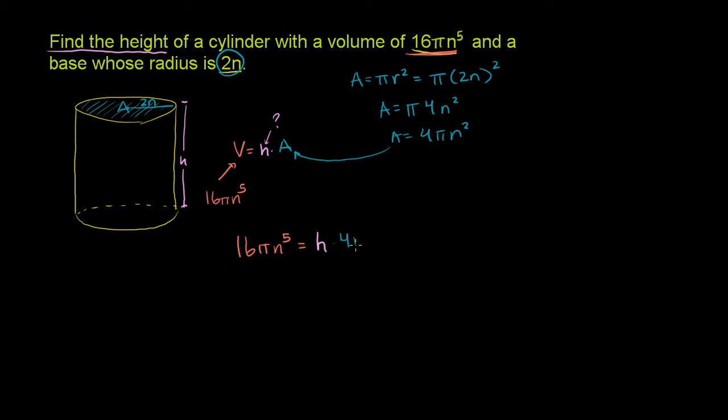A good place to start if we're trying to solve for h, or actually it'll get us right there immediately, is let's divide both sides of this equation by 4π n squared. So you divide the right side by 4π n squared. Divide the left side by 4π n squared. You have to do it to both sides. On the right hand side, these cancel out. That was the whole point. And you are left with h is equal to this thing over here.